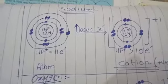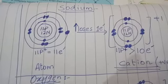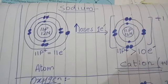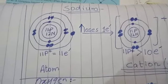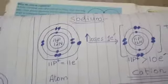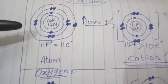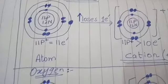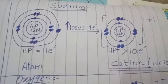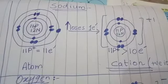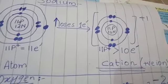Here you can see a figure of the sodium atom that has 11 protons and 11 electrons. Both charges are equal and the atom has no charge. When this sodium atom loses one electron from its valence or outermost shell, the number of protons relatively increases, and as a result a positive charge appears on the atom. This positively charged atom is called a cation or positive ion.